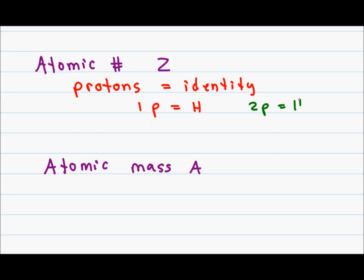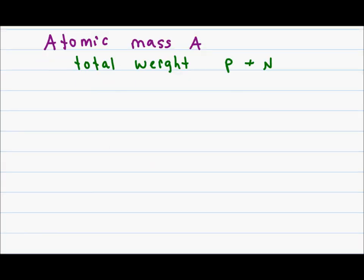The atomic mass, on the other hand, is not that specific to the individual atom. The atomic mass is just the total mass or total weight of the atom, and this comes from the weight of the protons plus the weight of the neutrons. The proton number doesn't change, but the neutrons can be different within atoms of the same type.